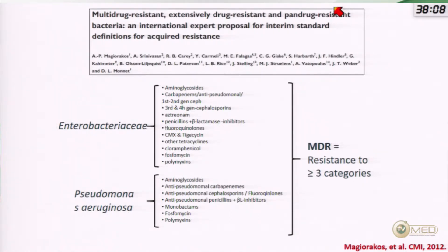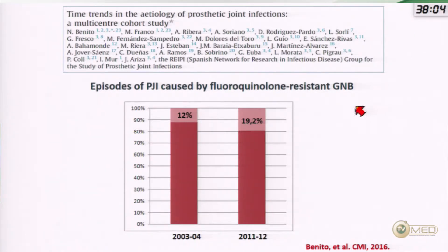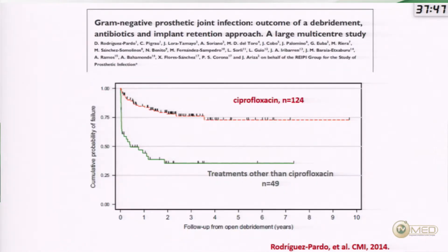In bone and joint infection, the important antibiotic is ciprofloxacin, because I know this is going to change the prognosis. In the same study, we witnessed a significant increase in ciprofloxacin-resistant gram-negative bacilli — from around 10 percent at the beginning of the period to around 20 percent at the end. This is important because the prognosis of patients with prosthetic joint infection resistant to quinolones dramatically changes. In the largest study of prosthetic joint infection caused by gram-negative bacilli managed with implant retention, when ciprofloxacin was used, the cure rate was around 75–80 percent.